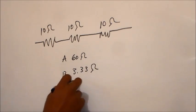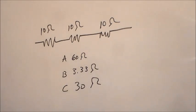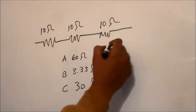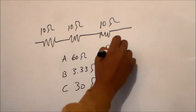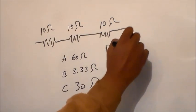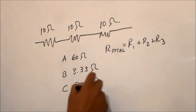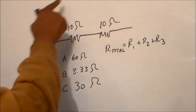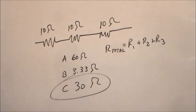If we remember, our total resistance is R1 plus R2 plus R3: 10 plus 10 plus 10. Our answer is 30 ohms.